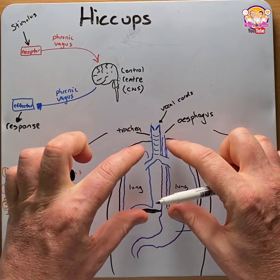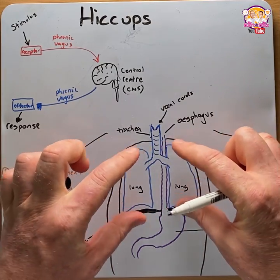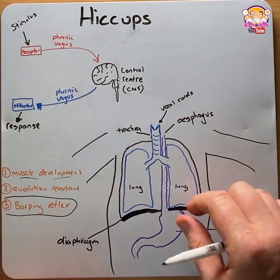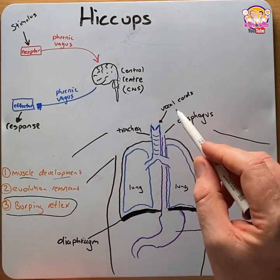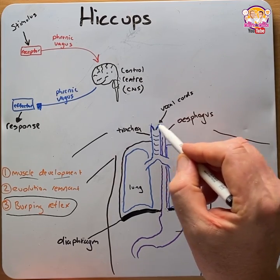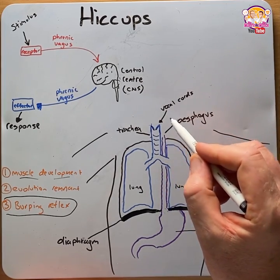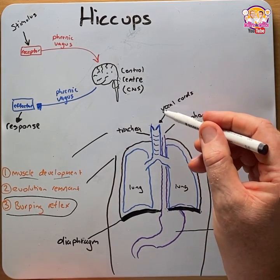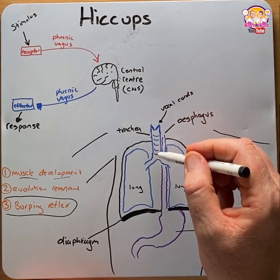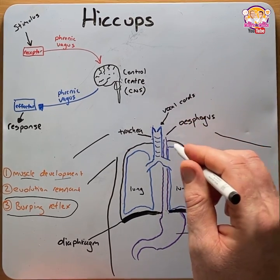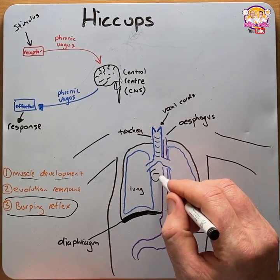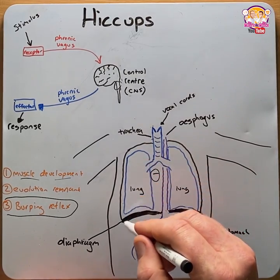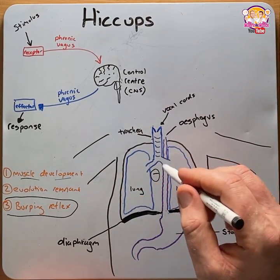This increases the volume of the lungs, but the vagus nerve causes contraction of the vocal cords, which stops air entering the lungs. This results in a negative pressure within the thoracic cavity.